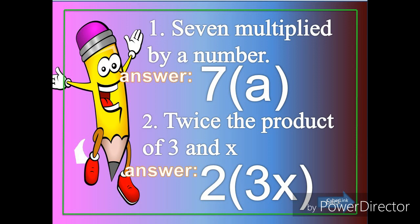Next, twice the product of 3 and x. Twice means two times. And then the product of means we're going to use the symbol of multiplication. The product of 3 and x, we have 3 times x, twice. So we have now the answer: 2 times 3 times x.